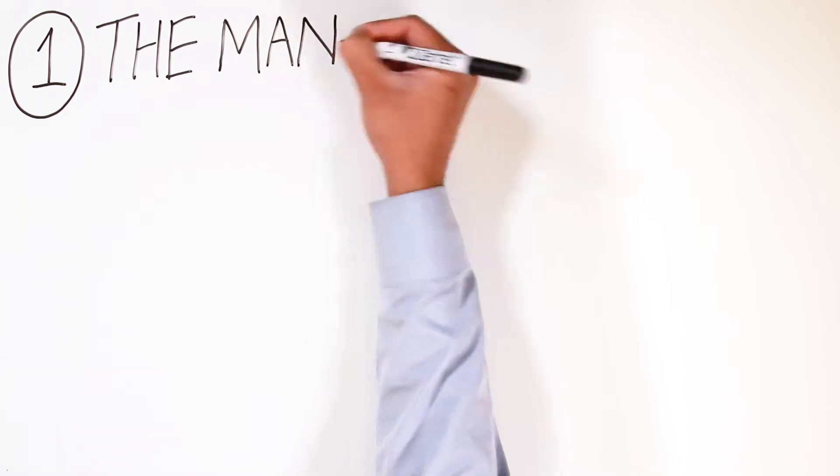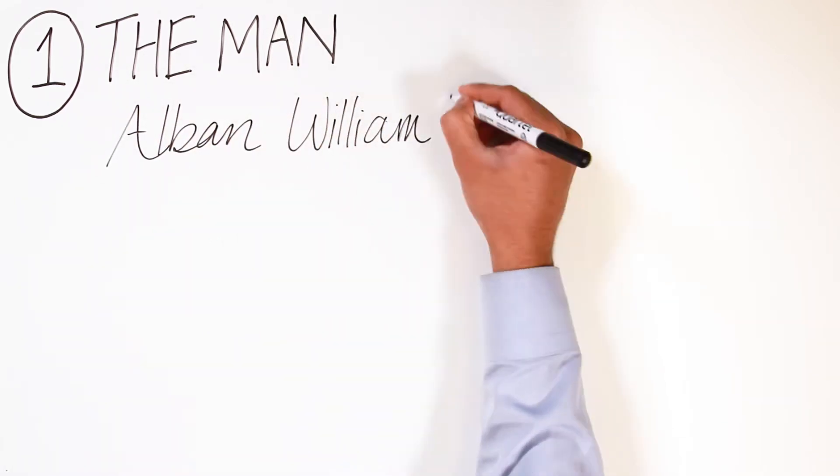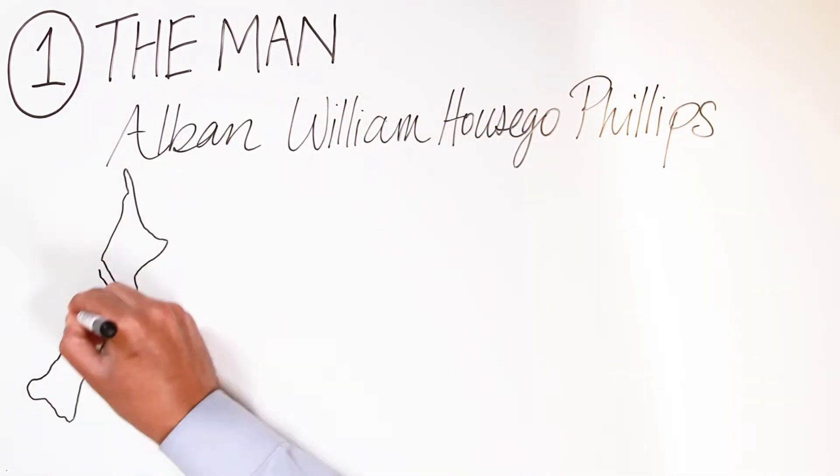First, the man. Albin William Hausko A.W. Phillips was born in 1914 in New Zealand. We'll just call him Bill for short.